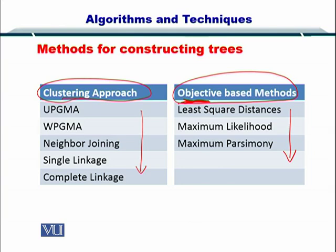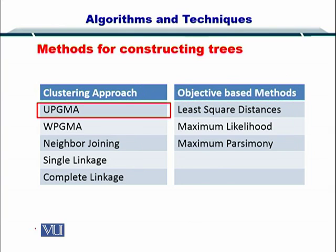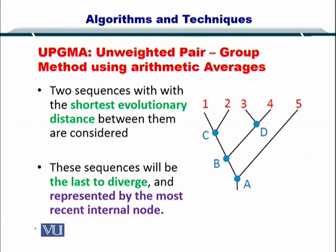To start with, we will take up the UPGMA method within the clustering approaches and see how it works. UPGMA, or the Unweighted Pair Group Method using Arithmetic Averages, helps us construct phylogenetic trees with roots as well.